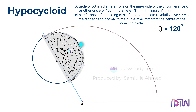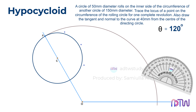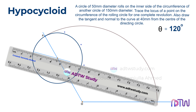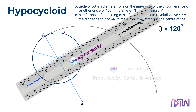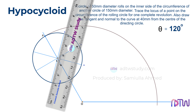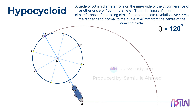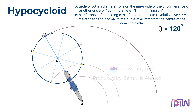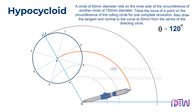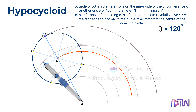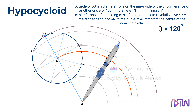Let's divide this circle into 8 parts using a protractor. After this, using a compass, draw arcs from each point using point O as the center.